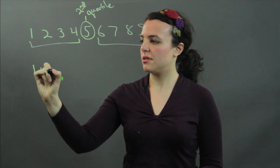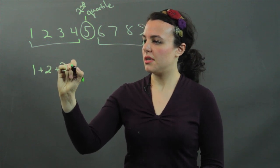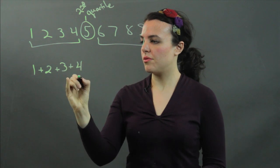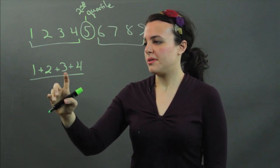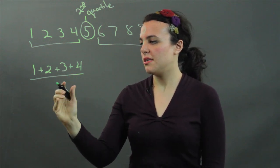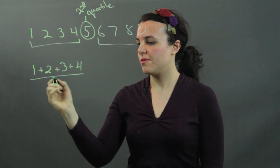So take the average. We get 1 plus 2 plus 3 plus 4. We've got 3 plus 3 is 6 plus 4 is 10. And we divide that by 4.